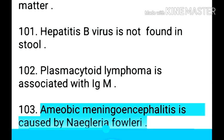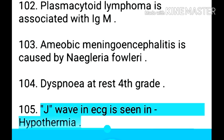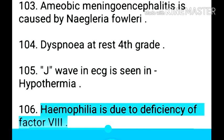Point 104: Amoebic meningoencephalitis is caused by Naegleria fowleri. Point 105: Dyspnea at rest is 4th grade. Point 106: J wave in ECG is seen in hypothermia. Point 107: Hemophilia is due to deficiency of factor VIII.